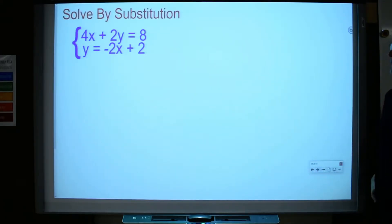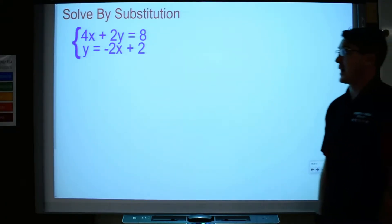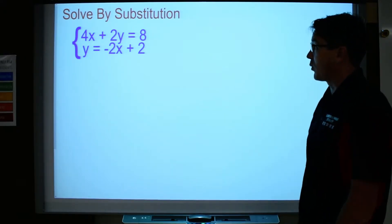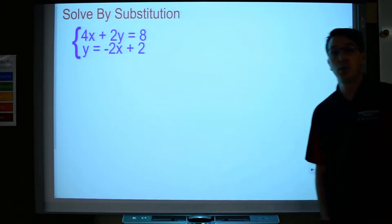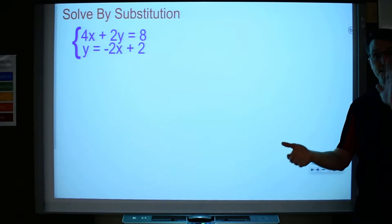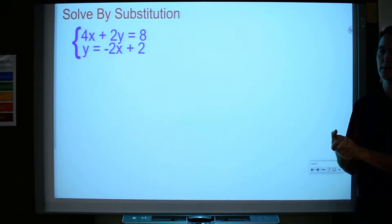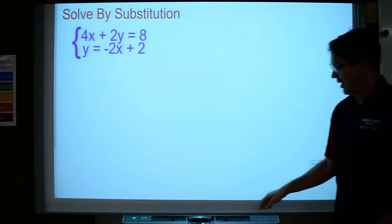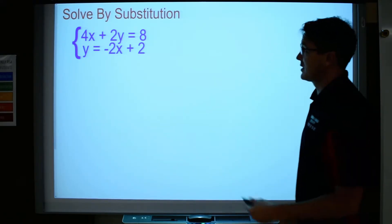So the first one I'm going to talk about is this one right here. 4x plus 2y equals 8, and y equals negative 2x plus 2 is the system. Go ahead and try to solve it. You totally didn't try to solve it, I could tell.